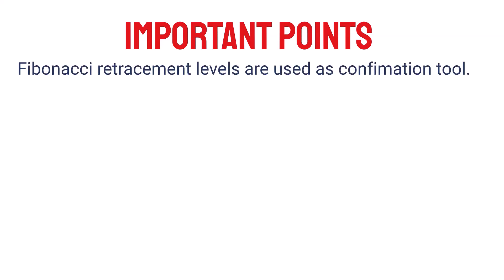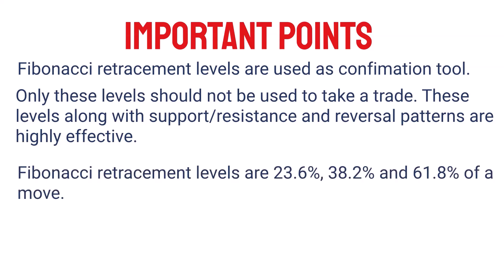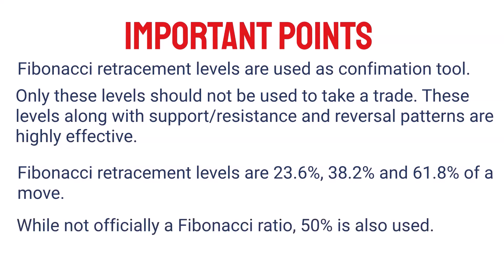Some important points to remember: Fibonacci retracement levels are used as a confirmation tool — these levels alone should not be used to take a trade. These levels, along with support, resistance, and reversal patterns, are highly effective. The Fibonacci retracement levels are 23.6%, 38.2%, and 61.8% of a move. While not officially a Fibonacci ratio, 50% is also used.